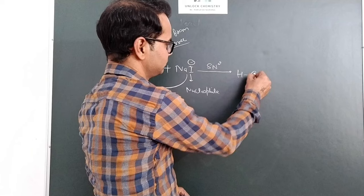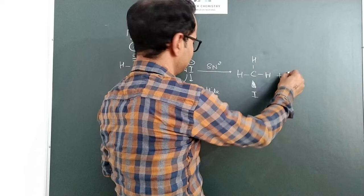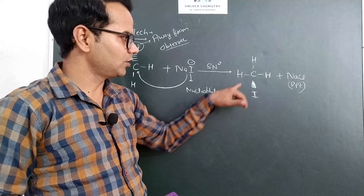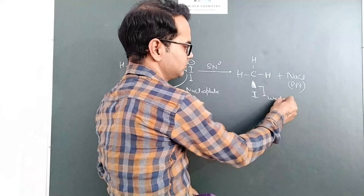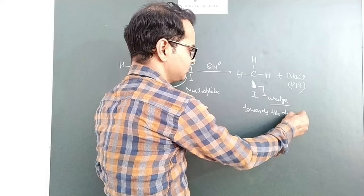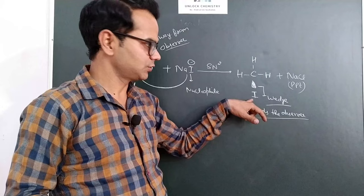As a result, we will obtain alkyl iodide. Now the bond of carbon and iodine is shown by a wedge, means this iodine is now towards the observer. Initially, the chloride is away from the observer, but after the reaction, alkyl iodide is formed and the bond of carbon and iodine is shown by a wedge line.